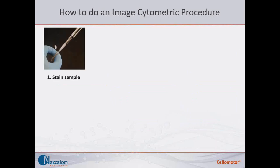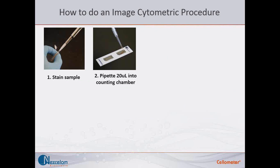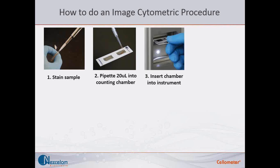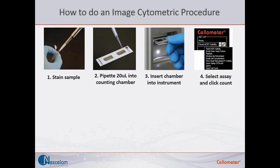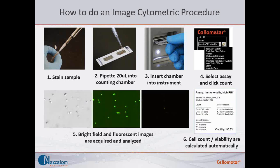The image cytometric procedure involves: first, collect the sample and stain with propidium iodide; then pipette 20 microliters into a counting chamber; insert the chamber into the system; select the specific assay for your sample. The system will then take several images for both bright field and fluorescence to analyze, and finally give you a cell count and viability automatically.